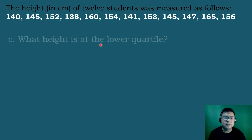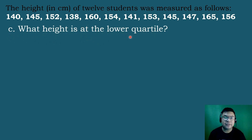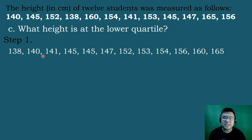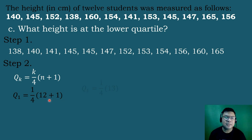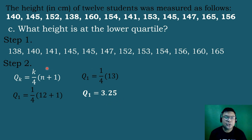Let's answer the next example: what height is at the lower quartile? We are looking for quartile 1, which is the lower quartile. Step 1 is to arrange the scores from lowest to highest. For step 2, we use the formula: Q sub k equals k over 4 times the quantity n plus 1. With k equals 1, that gives us 1 over 4 times 13, which equals 3.25. So quartile 1 is at the 3.25 position, meaning it is somewhere in between the 3rd and 4th numbers.